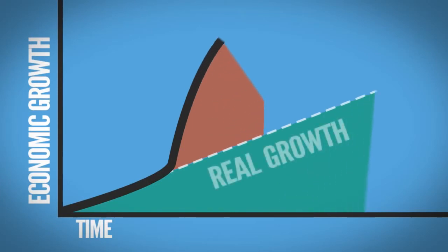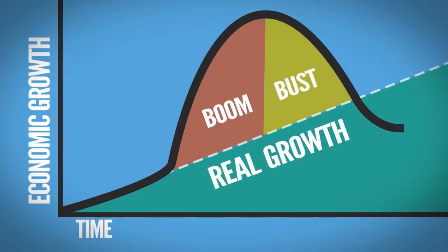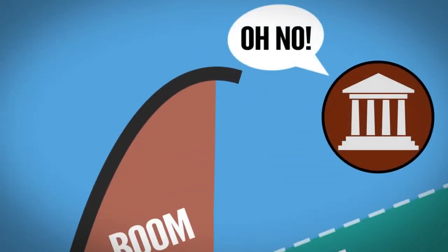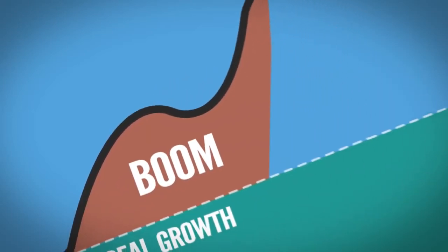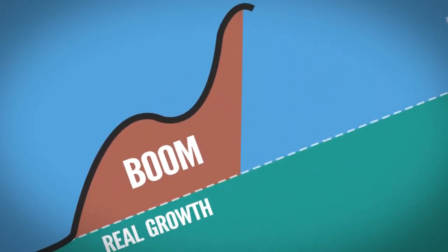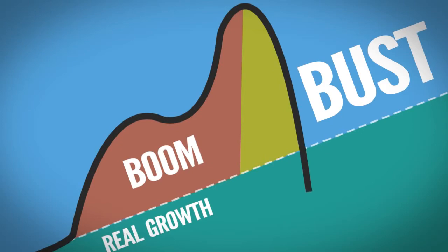Once economies go into a slump after these artificial booms, there's only one cure: a bust. All those doomed projects have to go belly up and the bad loans have to be liquidated. Unfortunately, central banks don't like to let this happen. Instead, they usually try to create more money and lower interest rates even further. This just adds fuel to the fire and makes the crash that much worse.